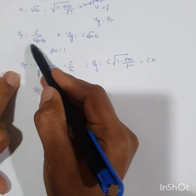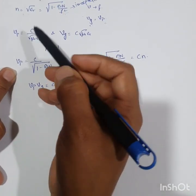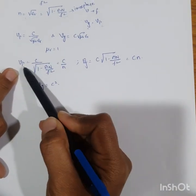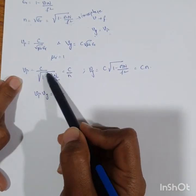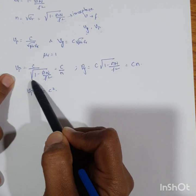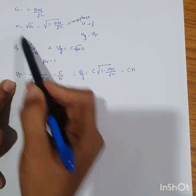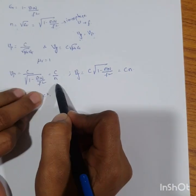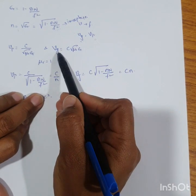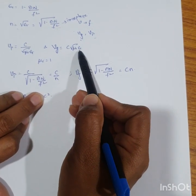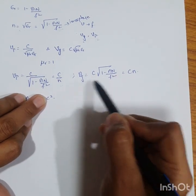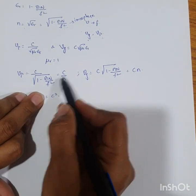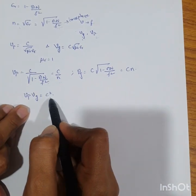Assuming mu_r of the medium is 1, we can write the phase velocity as v_p equals c divided by the square root of epsilon_r, where epsilon_r for the ionosphere is 1 minus 81n by f squared. The denominator is nothing but the refractive index n, so the phase velocity is c by n. Similarly, the group velocity is c times the square root of epsilon_r, which equals c times n. Notably, multiplying group velocity and phase velocity gives c squared.